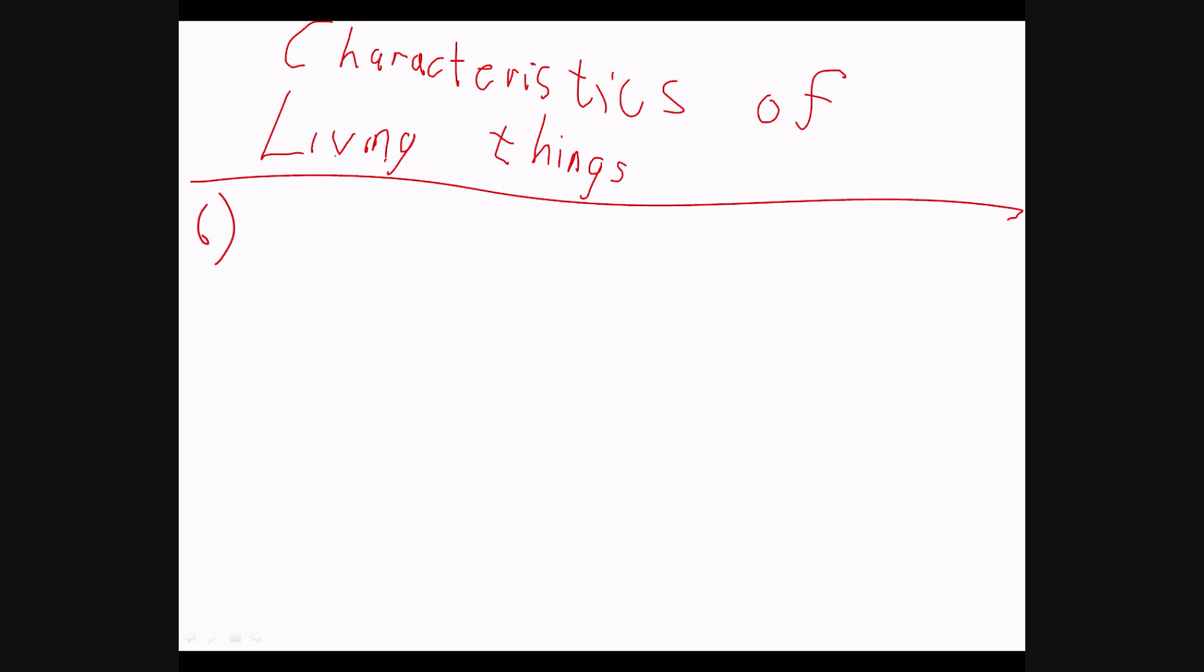I'm trying to think of a mnemonic to help you memorize this. Maybe homo sapien will remind you of it. But anyway, this is called homeostasis. Maintaining a constant internal environment. Homeostasis. Now, the last one, number seven.